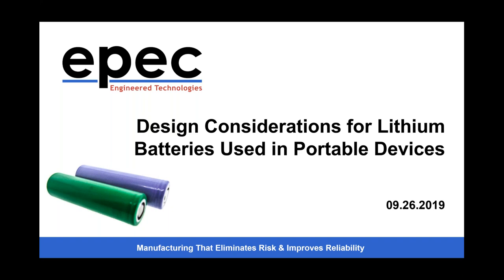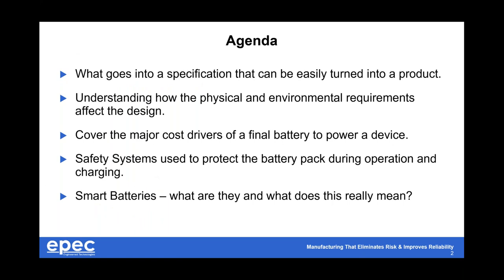What we'd like to cover today is what goes into a specification and how we can turn that specification into a product, and why that's important. Also, understanding how the physical and environmental requirements affect the design, touching on the major cost drivers of the final battery, safety systems used to protect the battery during operation and charging, and finally, smart batteries — what are they and what does it all really mean?